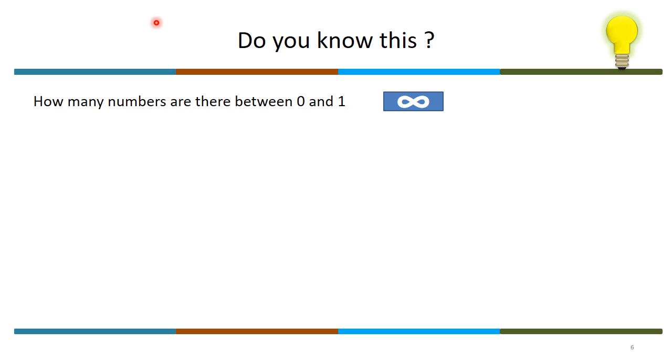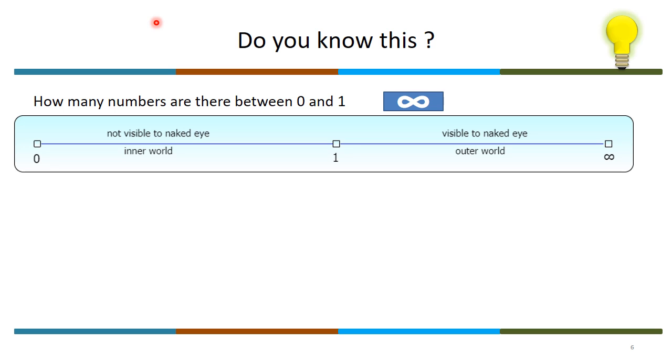To get a clear picture about the significance of numbers between 0 and 1, we have a completely inner world which is measurable with numbers between 0 and 1. We have one more world called outer world which is measurable from 1 to infinity. The outer world is visible to the naked eye; the inner world is not.